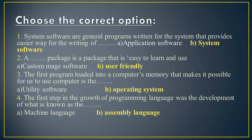Next one is choose the correct option. First one: system software are general programs written for the system that provides an easier way for writing. Option A is application software and option B is system software. So system software is correct.